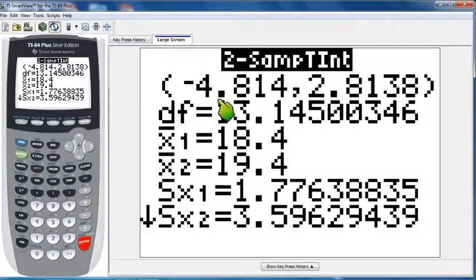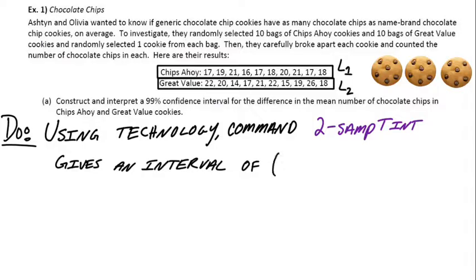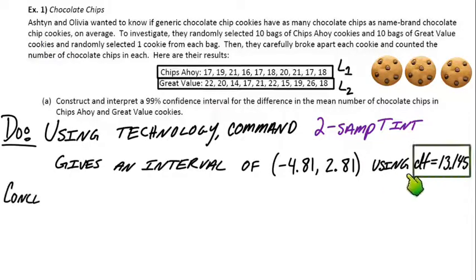So I've got my interval from negative 4.814 up to 2.8138. The calculator found the sample mean for the first group and the second group as well as the standard deviation for both. One important thing you need to take with you from this is the degrees of freedom. That's always something that the grader will look for if you use the T distribution. So we can say we use technology, we got the right command, this is the interval it gave us, that's great, there's the confidence interval, and we need to say what the degrees of freedom were. So that would be using 13.145 degrees of freedom. So anytime we ever use the T distribution at all, we should really mention the degrees of freedom. And with this two sample stuff, we know that it's just much more efficient and we get better data, better results if we let the calculator do it for us.